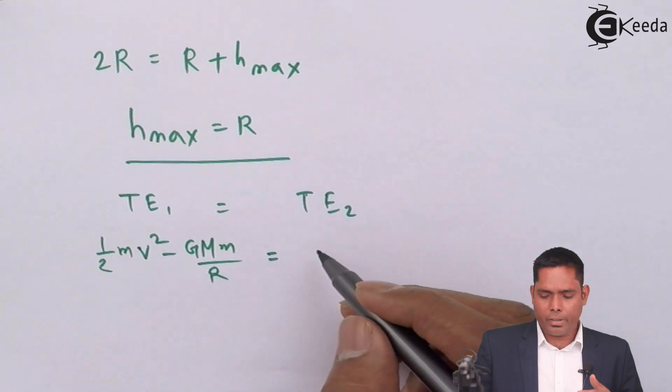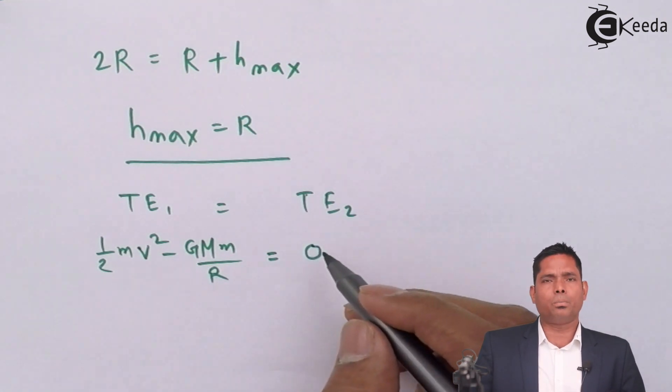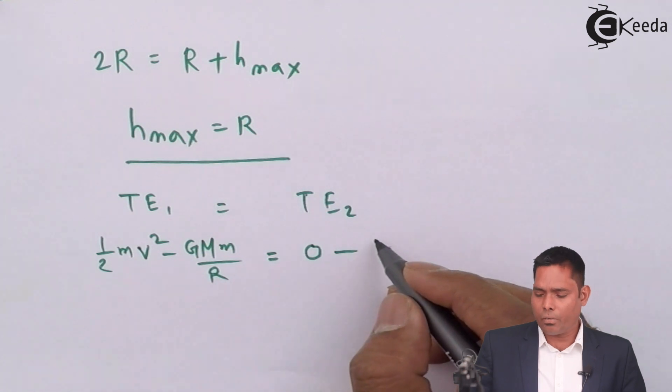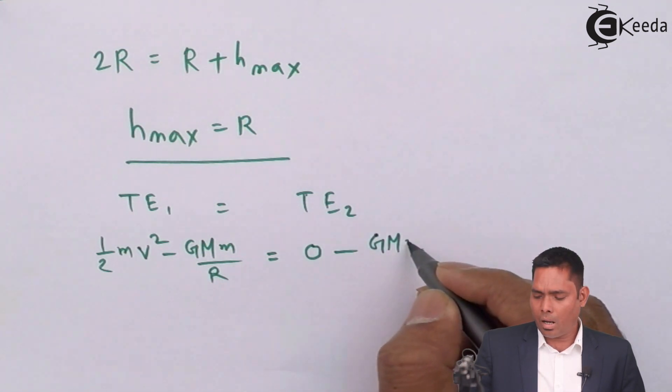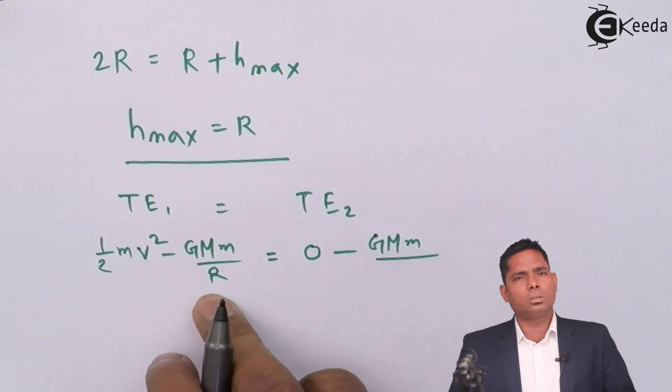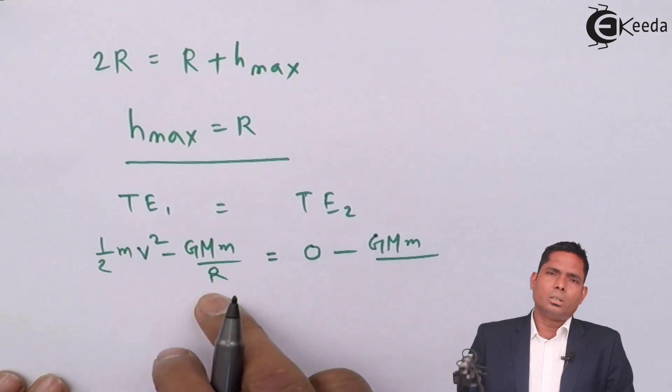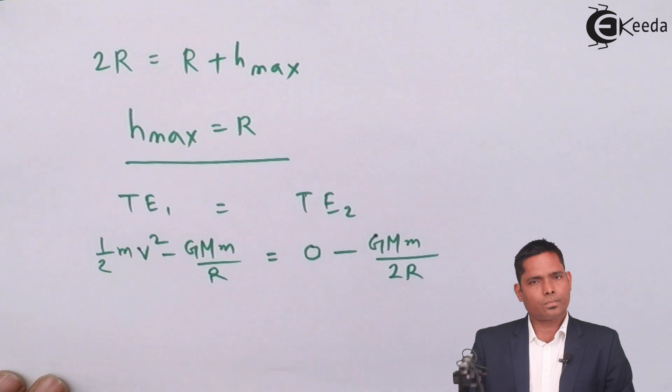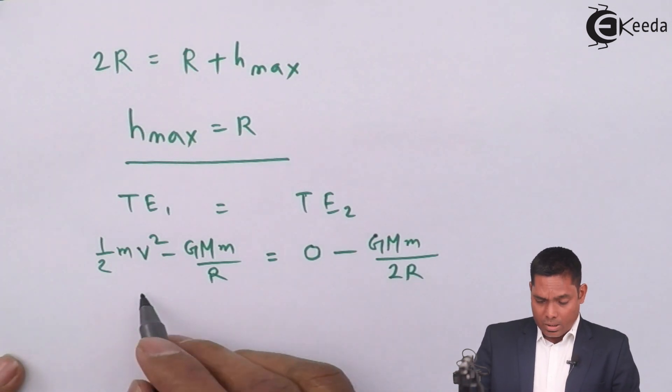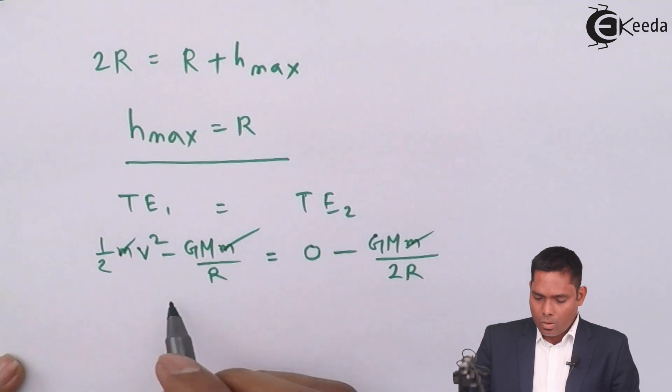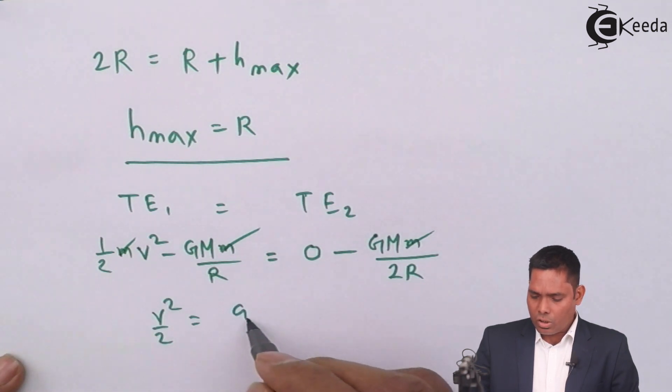At the highest point, the kinetic energy is zero because the bullet attains its maximum height, plus the potential energy which is negative: -GMm/(R+h). This becomes -GMm/2R since R+h = 2R. From here, v²/2 = GM/R - GM/2R, which comes out to be GM/2R.